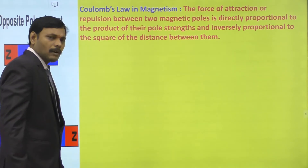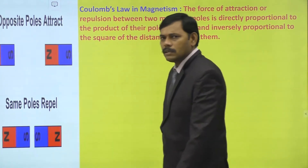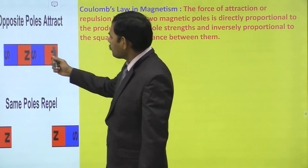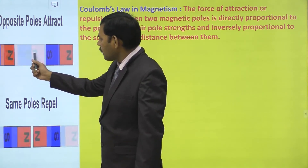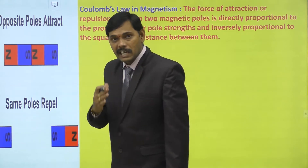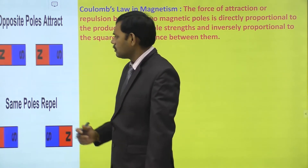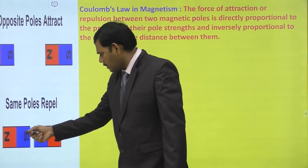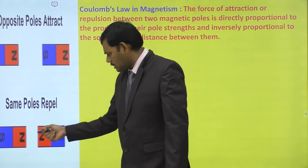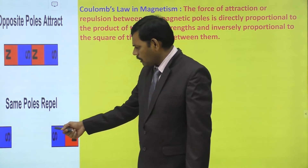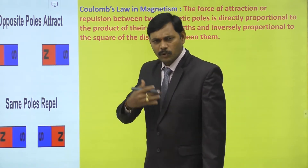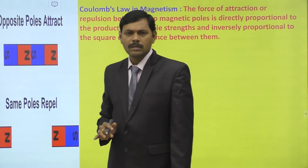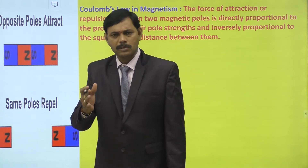Coming to the first topic: Coulomb's Law in Magnetism. As you observe in this animation, in the case of magnetic poles, let this be the south pole of one magnet and north pole of another magnet — south and north poles attract each other. There is an attraction force between unlike poles, as well as repulsion between like poles. You can clearly observe north-north poles repel and south-south poles repel each other.